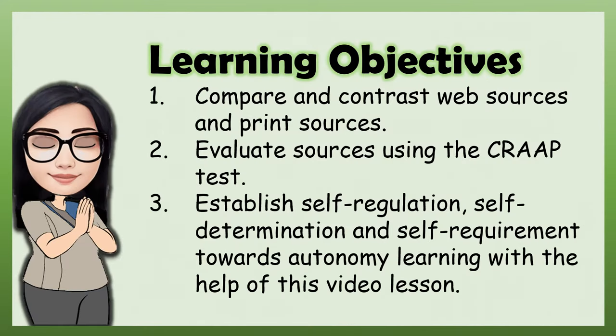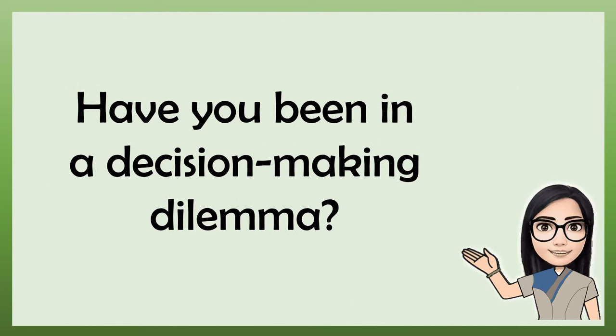For our learning objectives, at the end of the lesson, you should be able to: 1. Compare and contrast web sources and print sources. 2. Evaluate sources using the CRAAP test. 3. Establish self-regulation, self-determination, and self-requirement towards autonomy learning with the help of this video lesson.